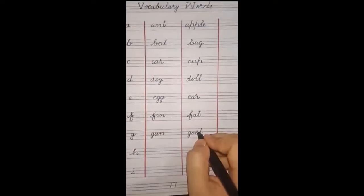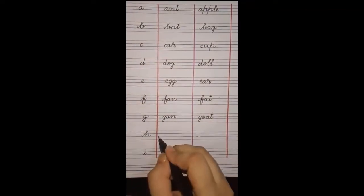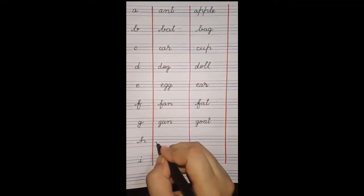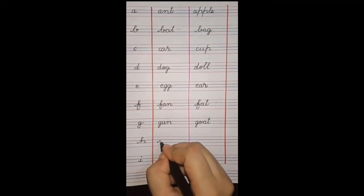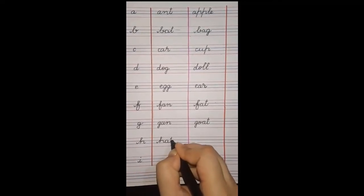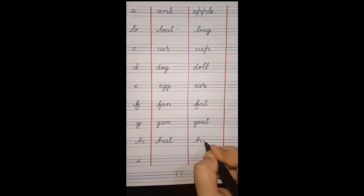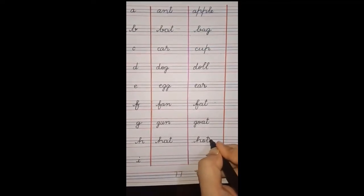Next hai H. H se two letter. H - hen, H - hat, H - hot. Hum write karenge H - hat. Hat jo sir pe pehente hain. Next hai H - hot. Hot means garam.